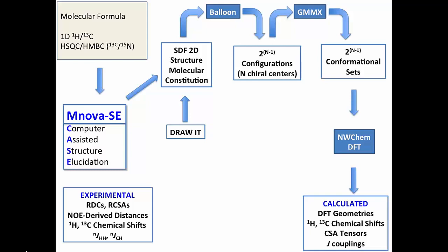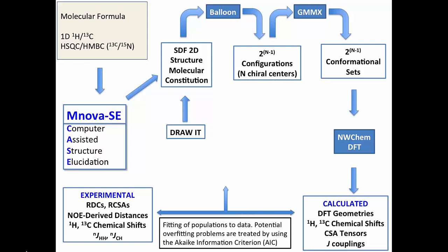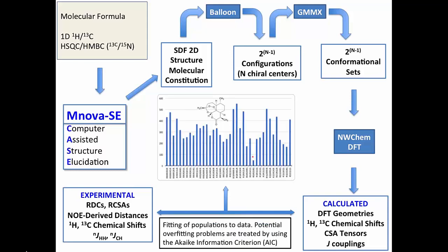RCSAs will not be incorporated yet, but the next version we have RDCs, NOE derived distance, chemical shift, and J coupling. Then you can perform a fitting of population to data, and then a potential overfitting problem will be treated using this Akaike information criteria. And the result will be a graphic like that, with which you will have all the quality factors or the chi-square.